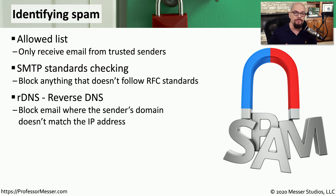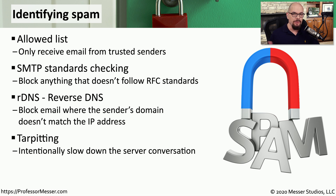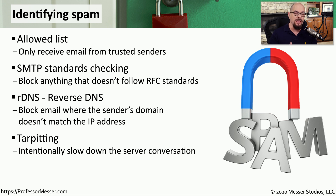Another great test is to perform a reverse DNS. You'll receive a message, perhaps from professormesser.com — your spam filter will then perform a reverse DNS, look at the IP address associated with that domain, and make sure the email received came from that known IP address. If it came from a different IP address, your spam filter can mark it as suspicious and prevent it from going to your users. Another technique that frustrates spam senders is called tar pitting. They want to send spam to as many people as possible as quickly as possible, and tar pitting slows down your mail server, making the process of sending and receiving messages take an excessive amount of time. This slows down the spammer's email server, so they may choose to simply skip over you and move on to another user that doesn't slow down the conversation.